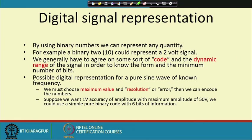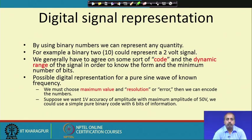Different number systems are possible, and in a computer system the number system used is the binary number system, where the individual digits are only 1s and 0s. We can represent two different states of some signal by means of these two different notations: 0 and 1.